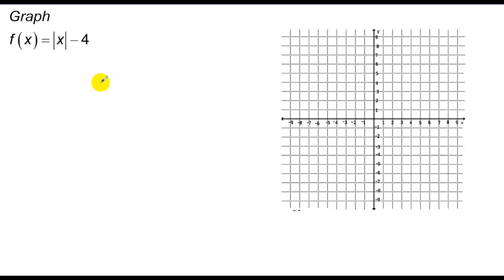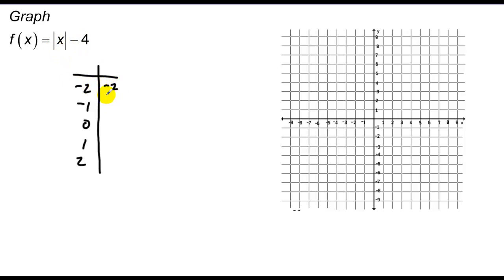Let's do another one: absolute value of x minus 4, using the same points -2, -1, 0, 1, 2. Plugging in -2: absolute value is 2 minus 4, which is -2. Negative 1: 1 minus 4 is -3. Zero gets me -4, 1 gets me -3, and 2 gets me -2. Graph those and you'll notice these graphs all look the same — the only difference is where the vertices are.